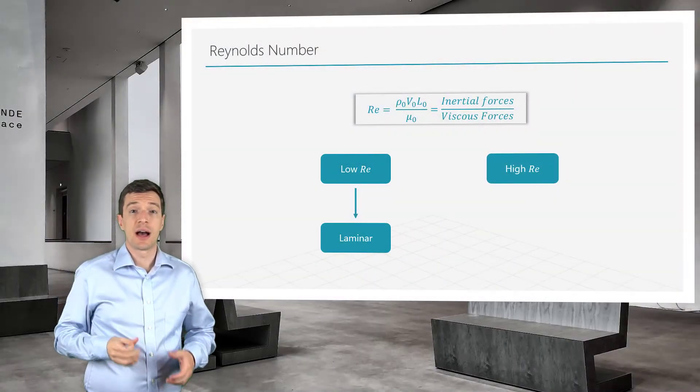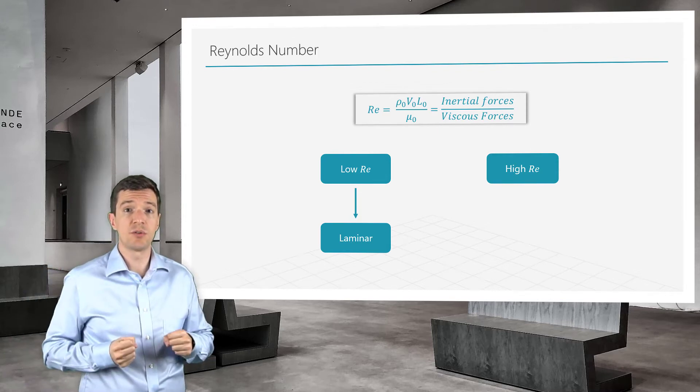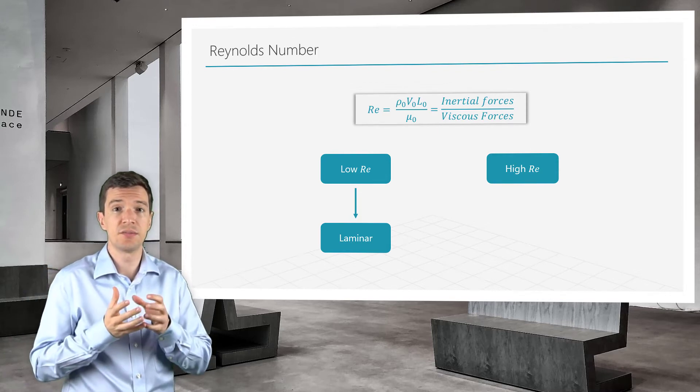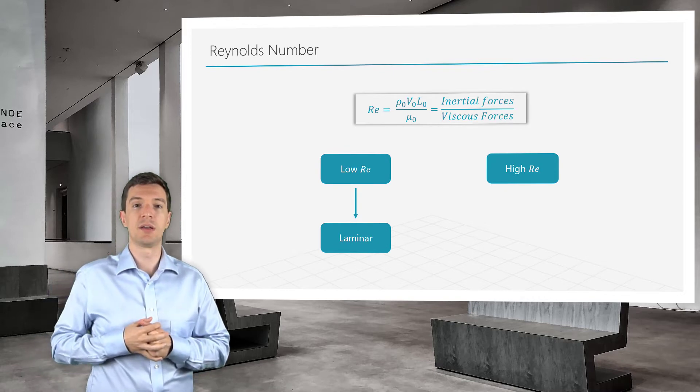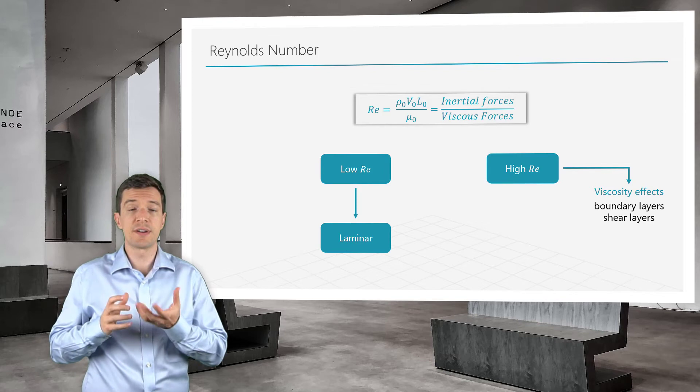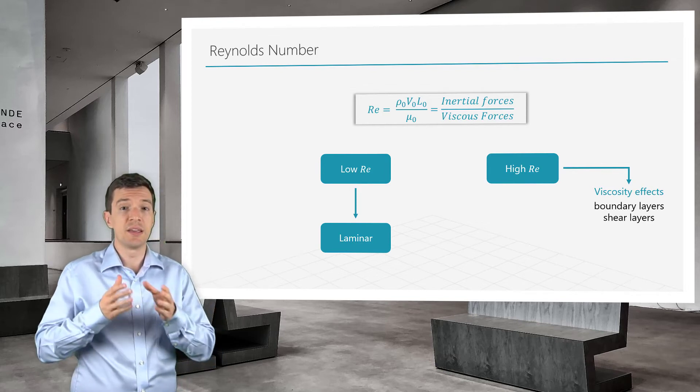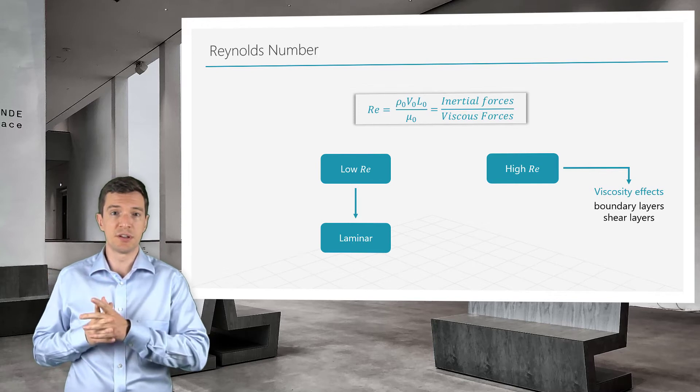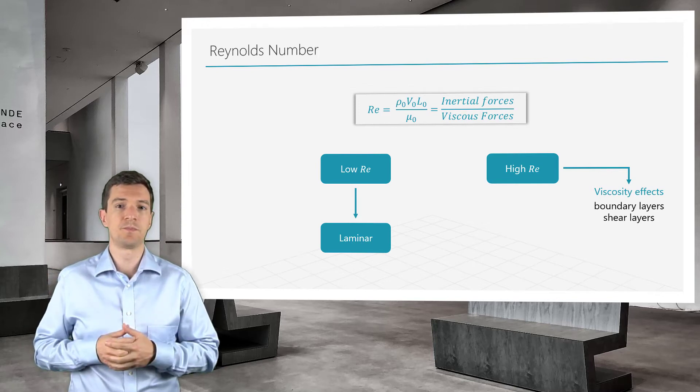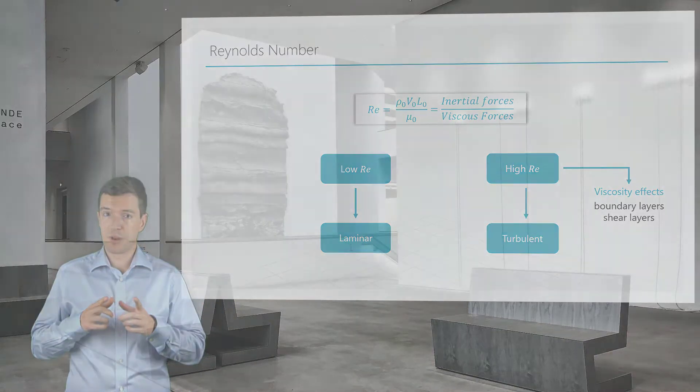On the other hand, high Reynolds number means that the inertial forces are dominating the viscous forces. In this case, the viscous effects are limited to very narrow regions near the walls, the boundary layers, and in between different flow streams, the shear layers. High Reynolds number flows are always turbulent.